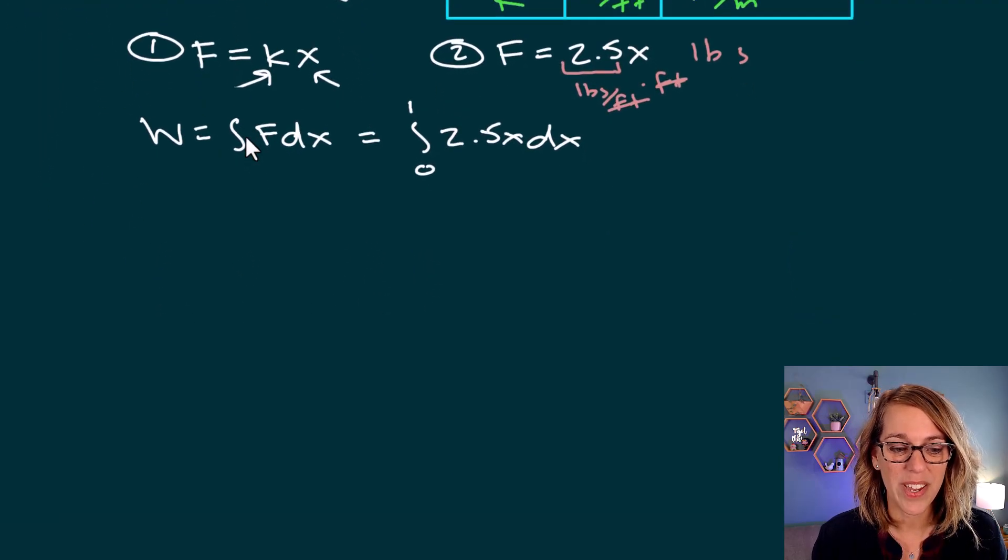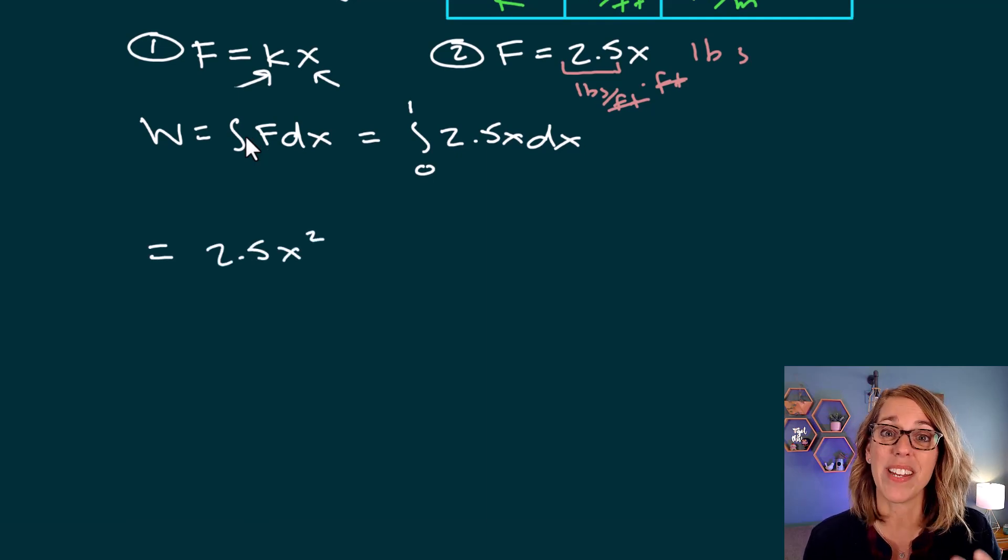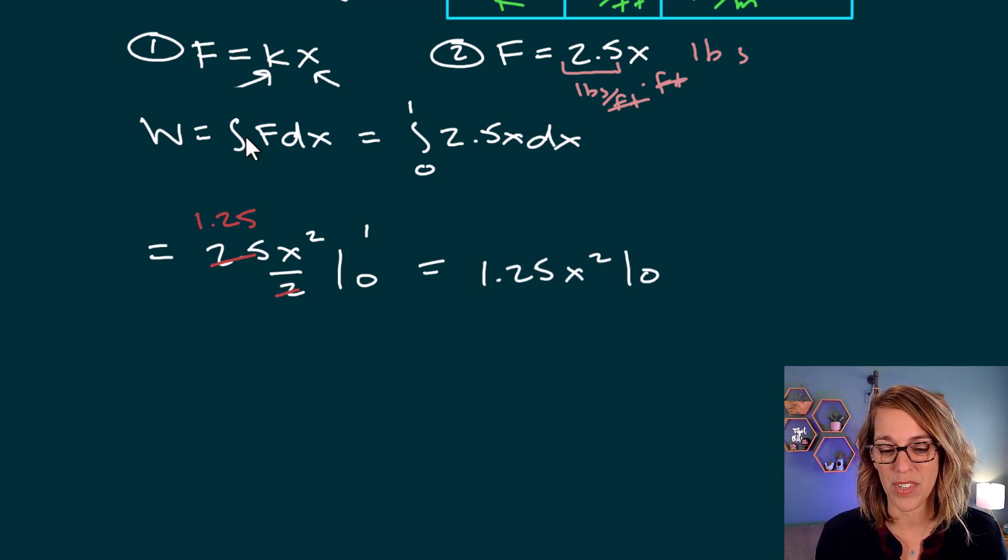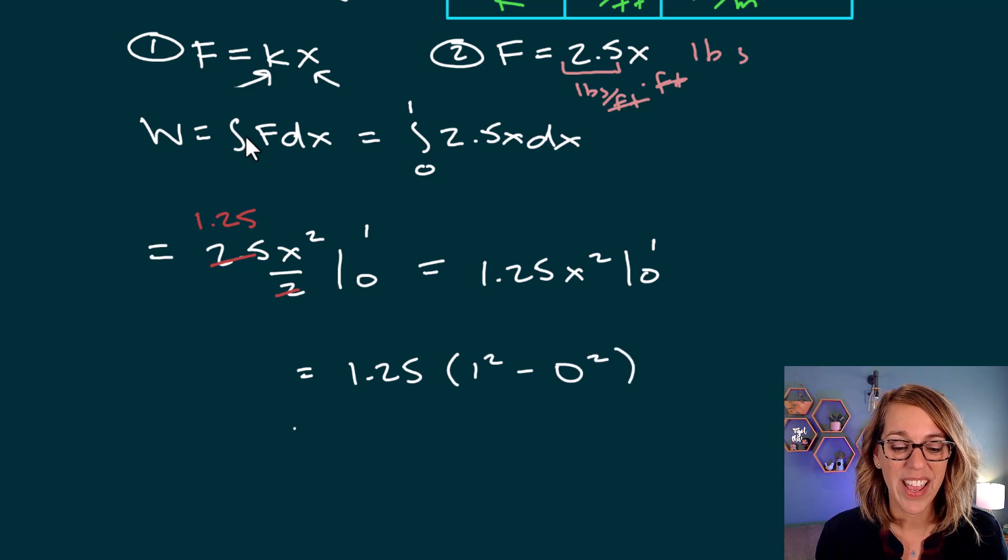Let's give us some more room. We are ready to integrate. That is going to give me 2.5. Integrating the x gives me an x squared divided by two. And we're going to evaluate that from zero to one. Let's go ahead and divide 2.5 by two. That gives me 1.25. So the antiderivative that I'm going to be evaluating is 1.25x squared from zero to one. This gives me 1.25 times one squared minus zero squared. And I end up with 1.25.